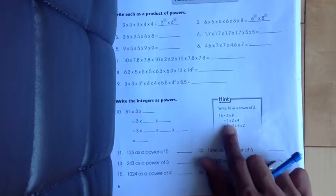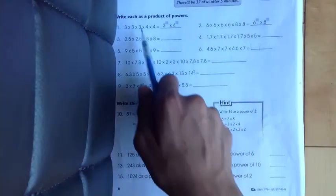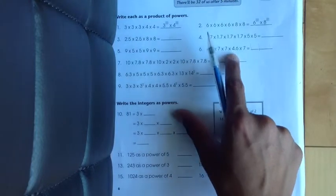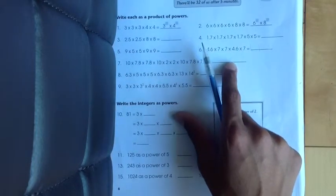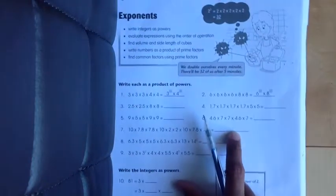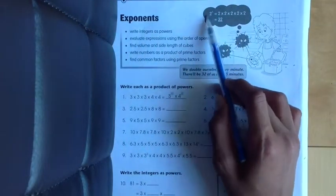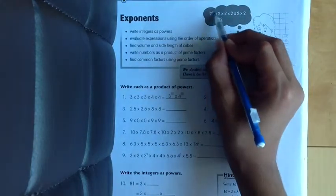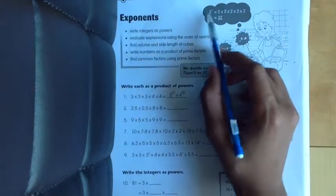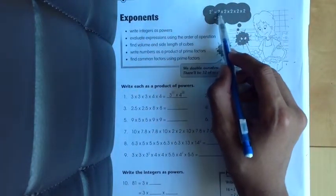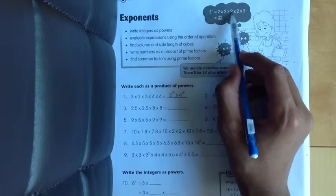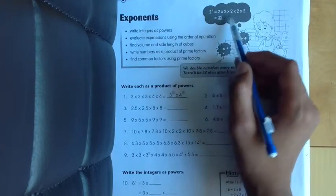Exponents - these right here are exponents. But before we start our worksheet, let's go up and read the top. Now, this is an exponent right here, the small 5. So 2 to the power of 5 is equal to 2 times 2 times 2 times 2 times 2, which is 32.